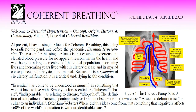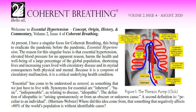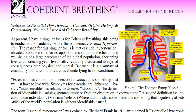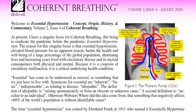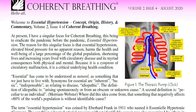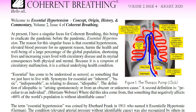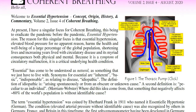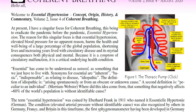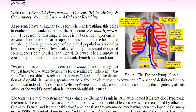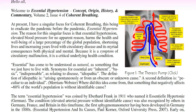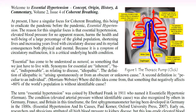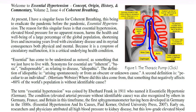Essential has come to be understood as natural, as something that we just have to live with. Synonyms for Essential are Inherent, Basic, Indispensable. As relating to disease: Idiopathic. The definition of Idiopathic is arising spontaneously or from an obscure or unknown cause. A second definition is peculiar to an individual — Merriam-Webster. Where did this idea come from, that something that negatively affects 60% of the world's population is without identifiable cause?